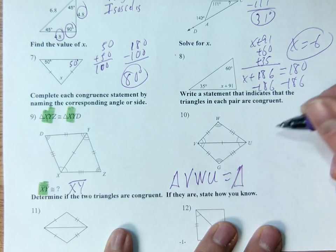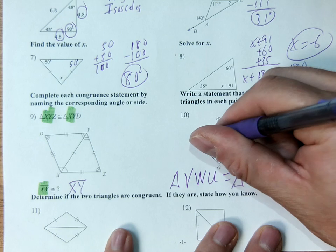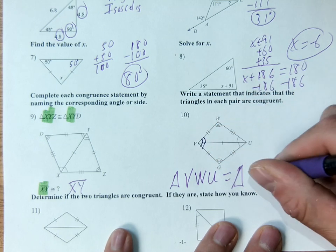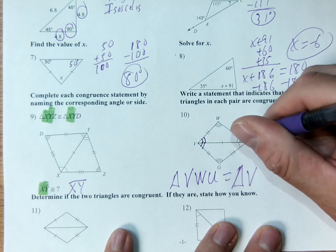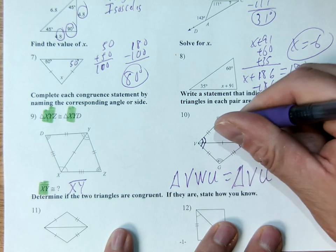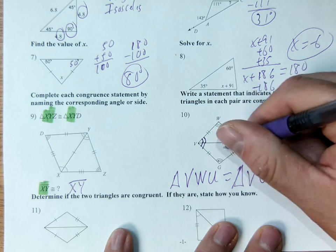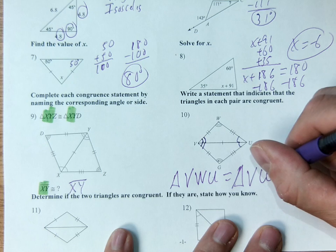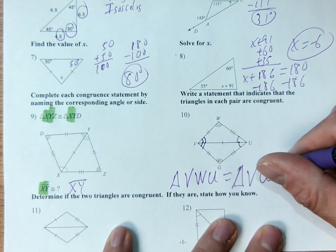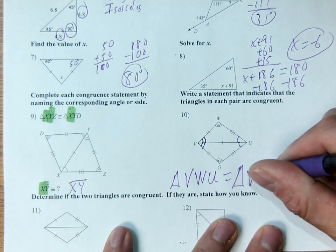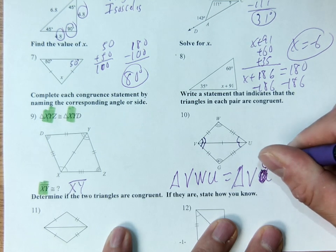Which angle goes with angle V? Angle V this time is marked with two markings. So is the other one on the bottom. So that goes with V. U goes with U. G goes with W this time. Now look, I've already made a mistake. U should go with U. This shouldn't be U, this should be G. This should be VG and then U.